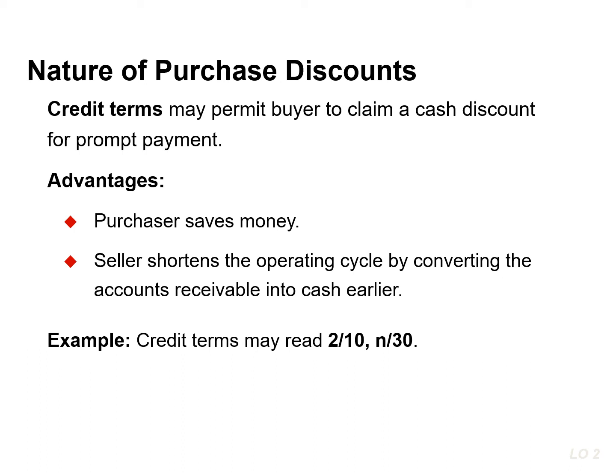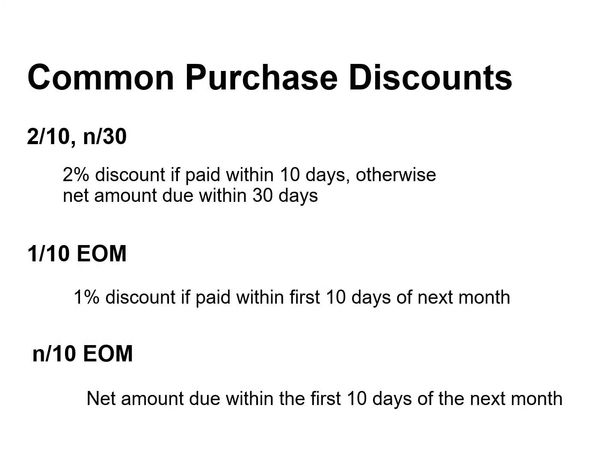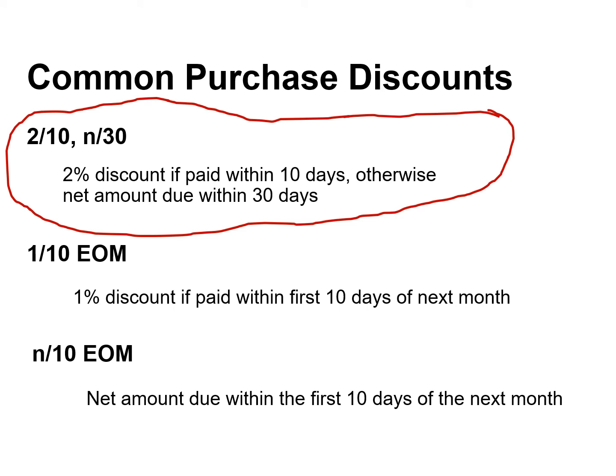For example, if credit terms are 2/10 net 30, this means that a 2% cash discount may be taken on the invoice price less any returns or allowances if the payment is made within 10 days of the invoice date — that's the discount period. Otherwise, the invoice price less any returns or allowances is due 30 days from the invoice date.